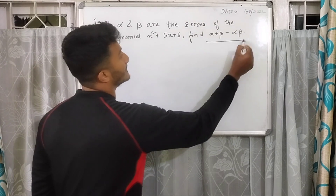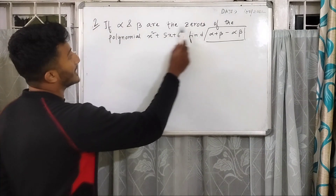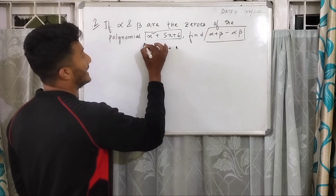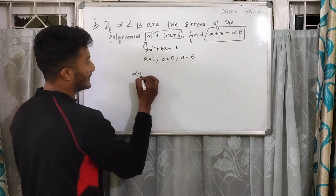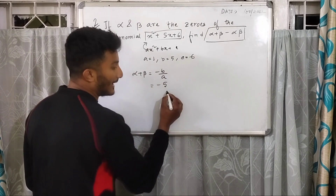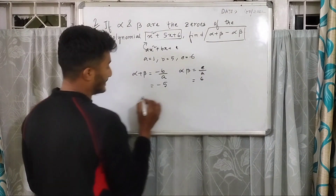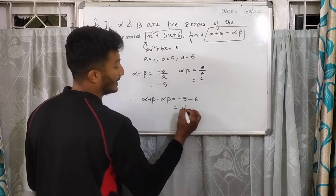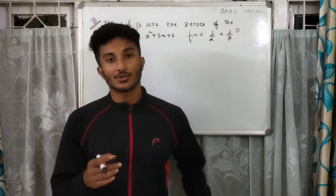We have to find the value of alpha plus beta minus alpha beta. The polynomial is x² + 5x + 6, so comparing with ax² + bx + c, a = 1, b = 5, c = 6. Alpha plus beta = −b/a = −5, and alpha beta = c/a = 6/1 = 6. Therefore, alpha plus beta minus alpha beta = −5 − 6 = −11. This is our required value.